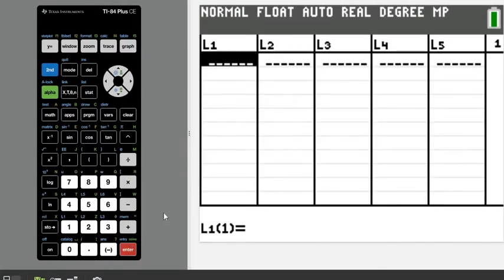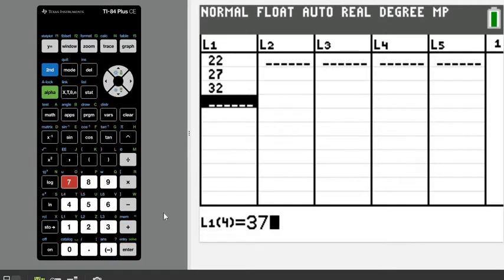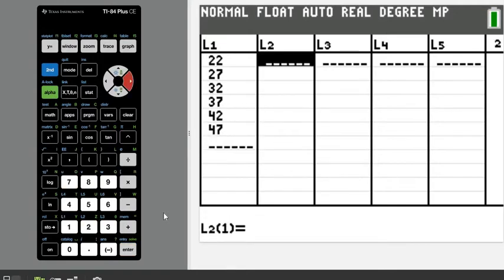So stat and edit, and let's go and enter in L1 our midpoint. So I have 22, 27, 32, 37, 42, and 47. In L2, I'm going to enter my frequency. So I have three that fall in the first class, 6, 7, 5, 3, and 1. So I don't have to do anything else other than finding the midpoint as far as hand calculations go.